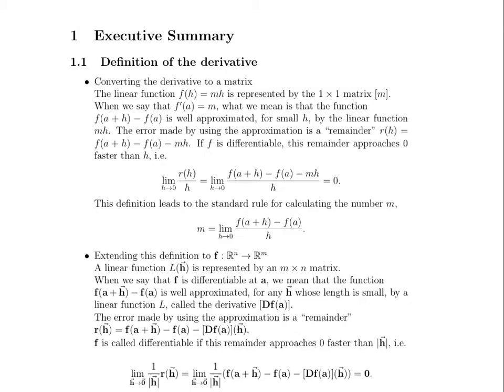What do we already know? When we have a very basic function that maps from R to R, the linear function that acts on h, Mh, is represented by the 1 by 1 matrix M. When we say that F prime, or the derivative of F at a, is equal to M, what we mean is that the function, which is the difference in function values between the function value at a and the function value at a close-by point a plus h, is well approximated for very small h's by the linear function Mh. So essentially, what we're saying is that you may have heard the term local linearity.